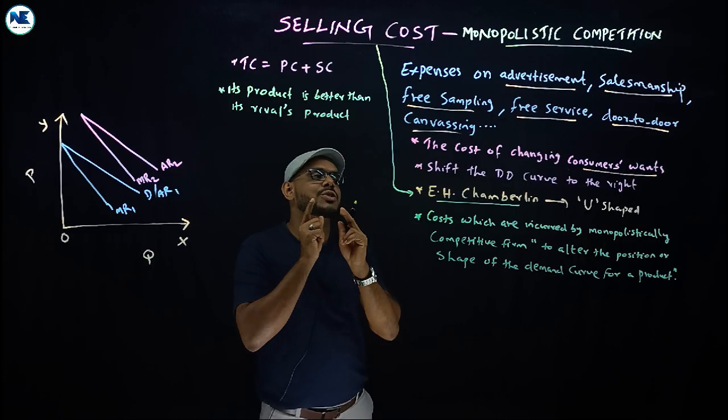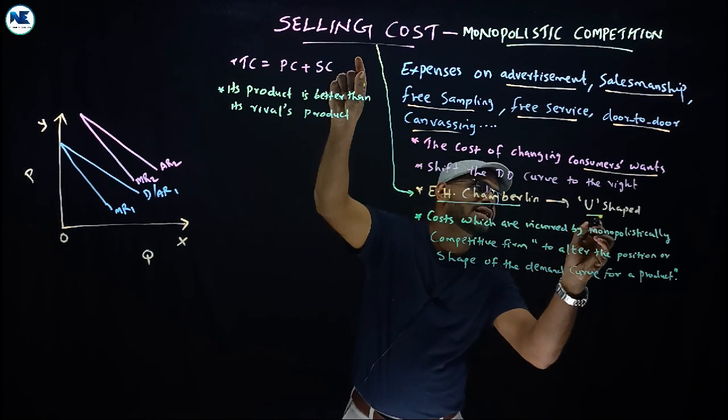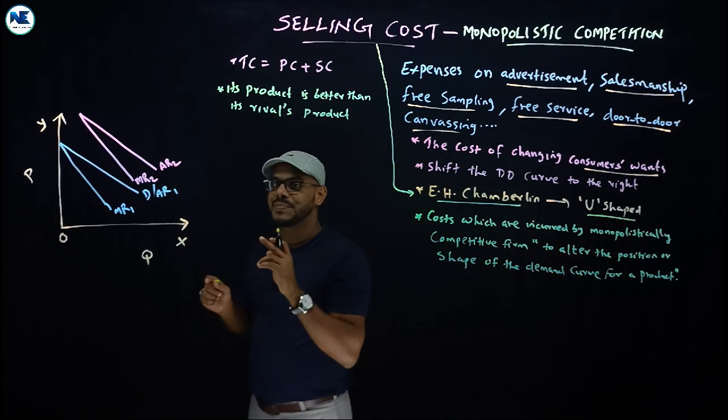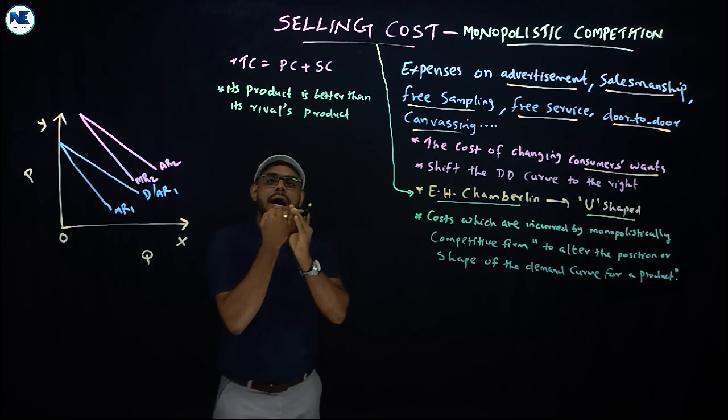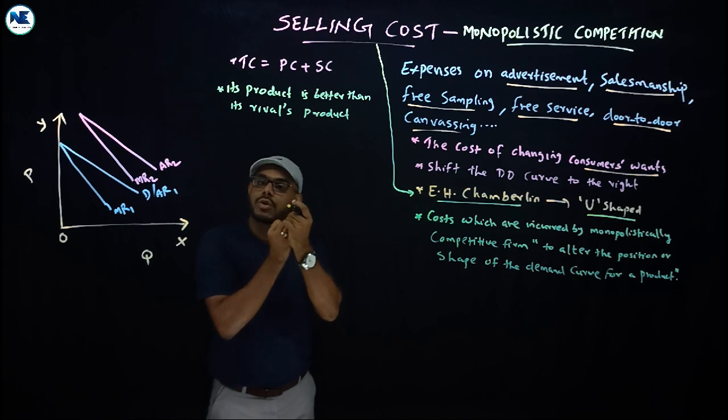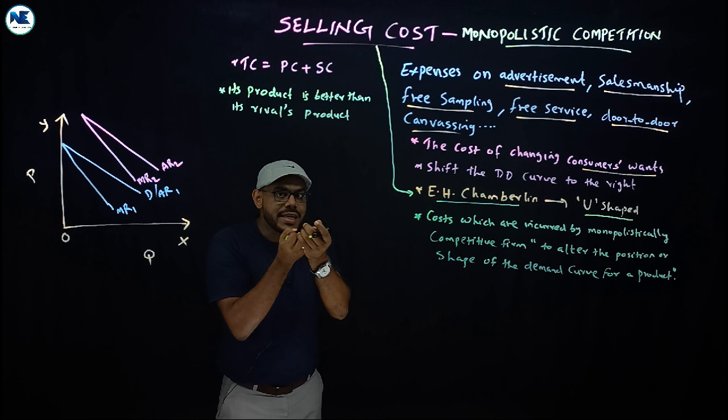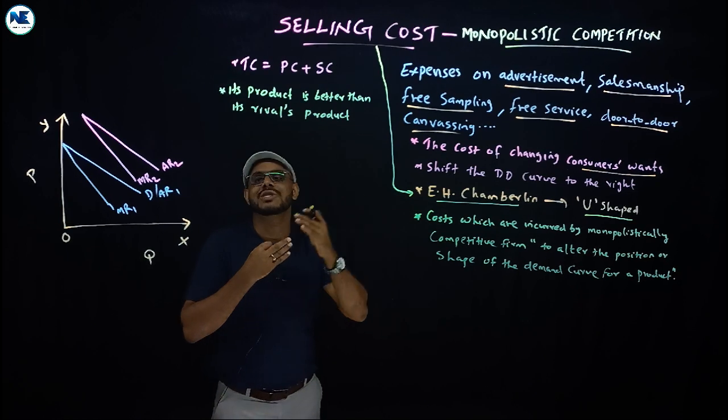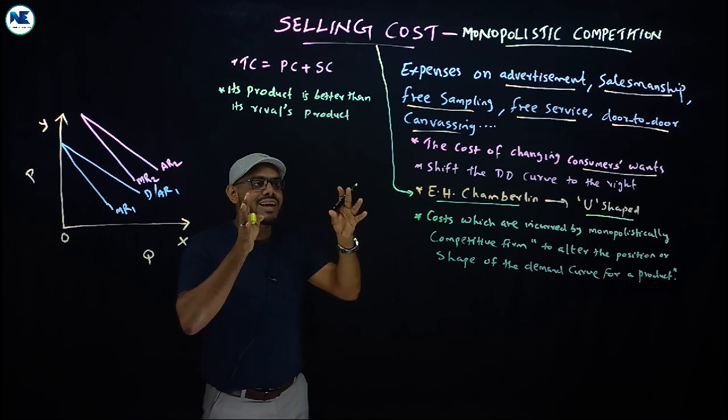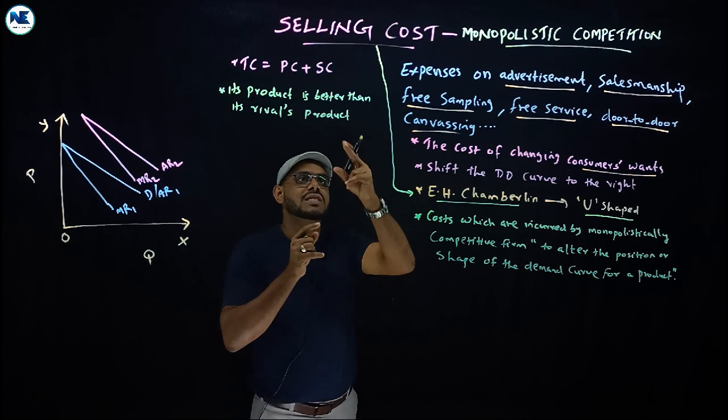E.H. Chamberlain argued that the shape of the selling cost is U-shaped. When you look at marginal cost, it's U-shaped. Average total cost is U-shaped. Average variable cost is U-shaped. Similarly, when you look at the selling cost curve, it is also U-shaped.